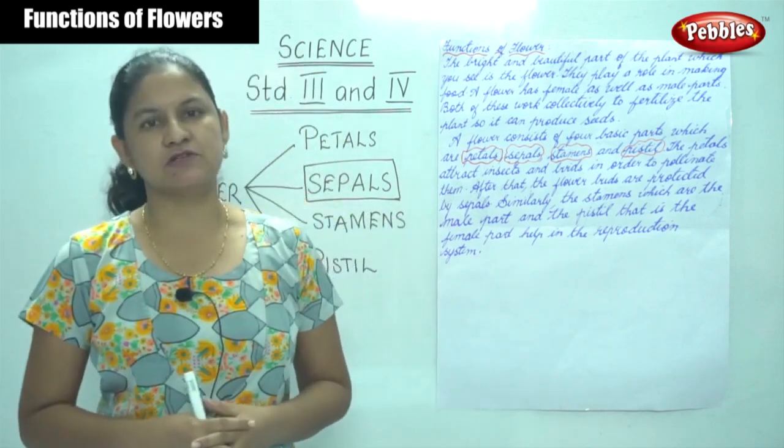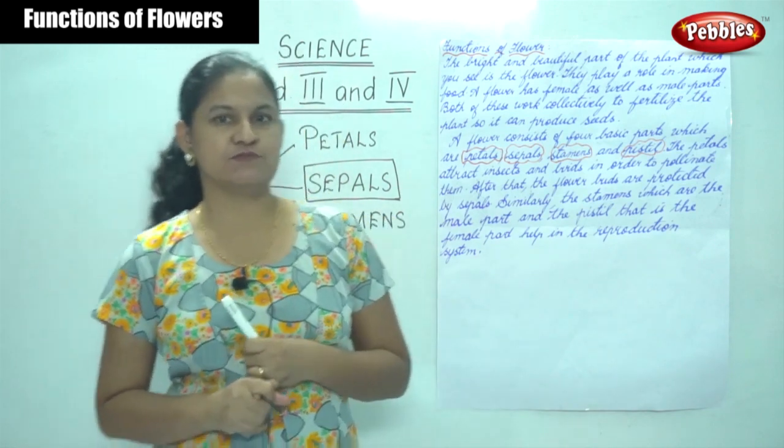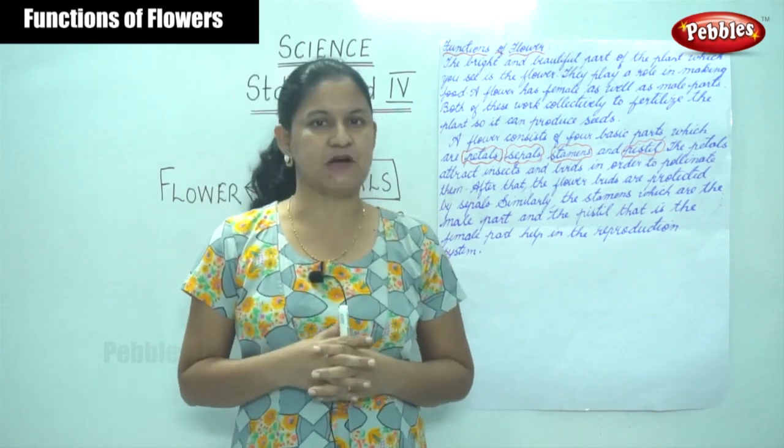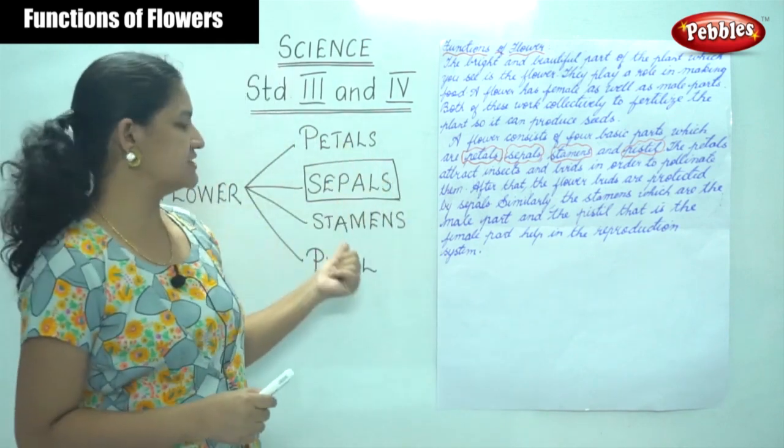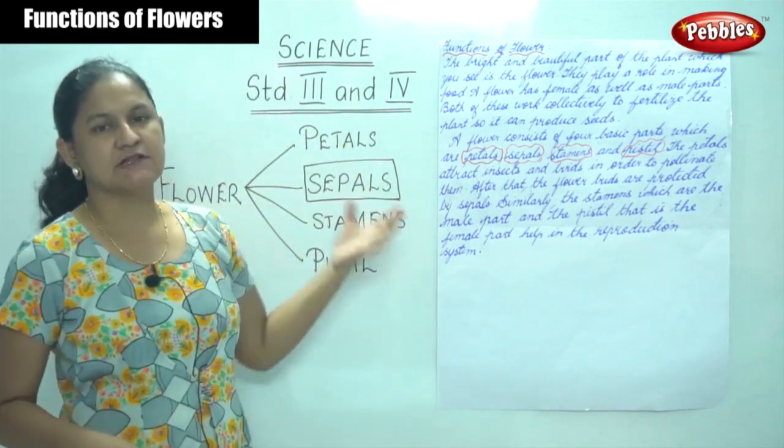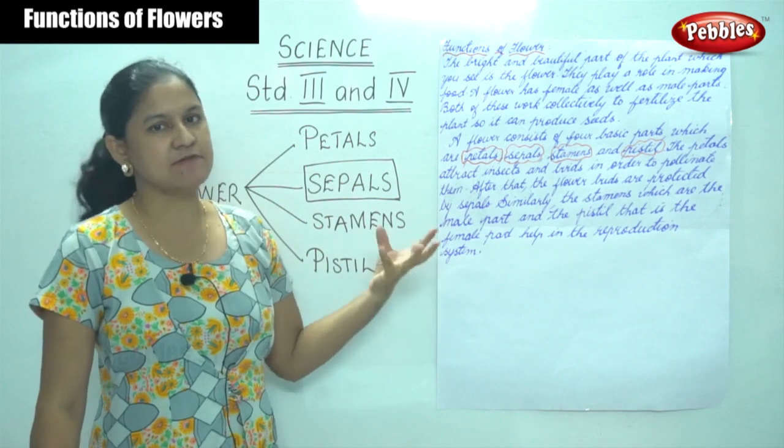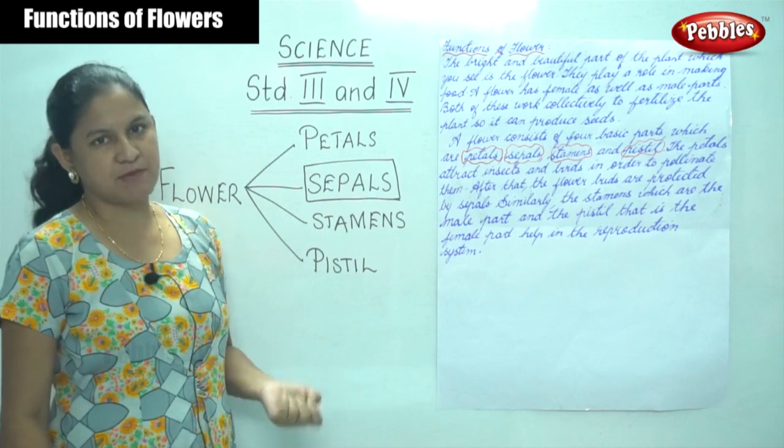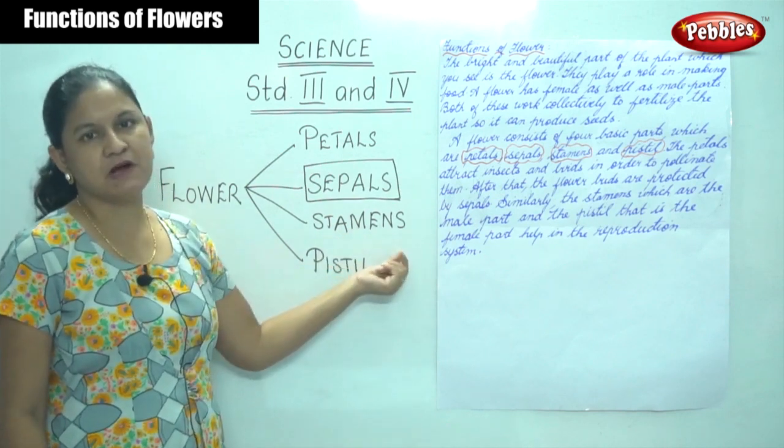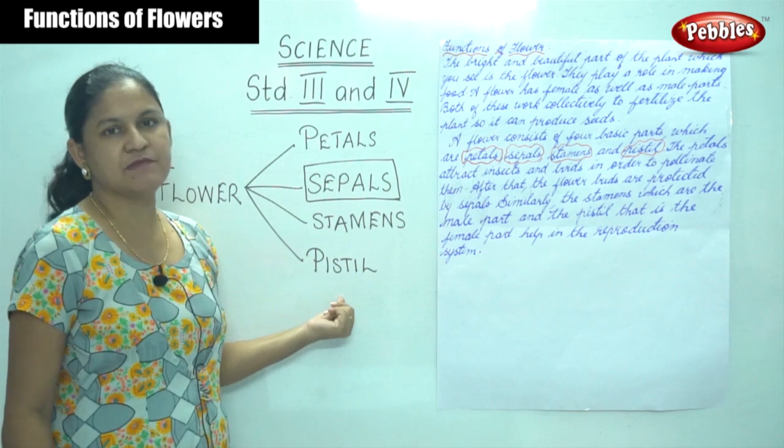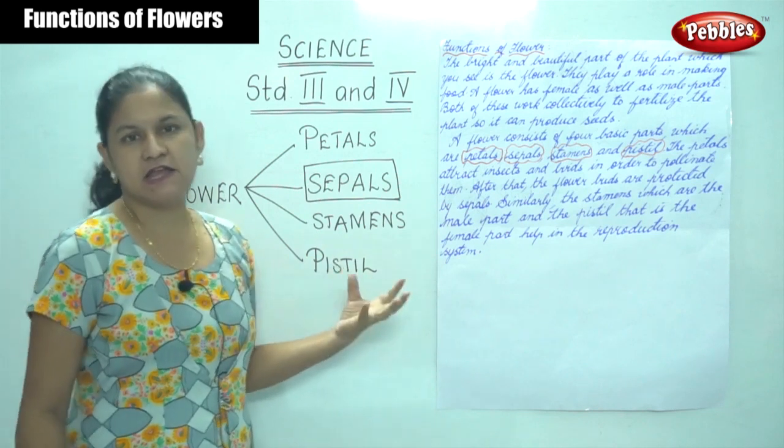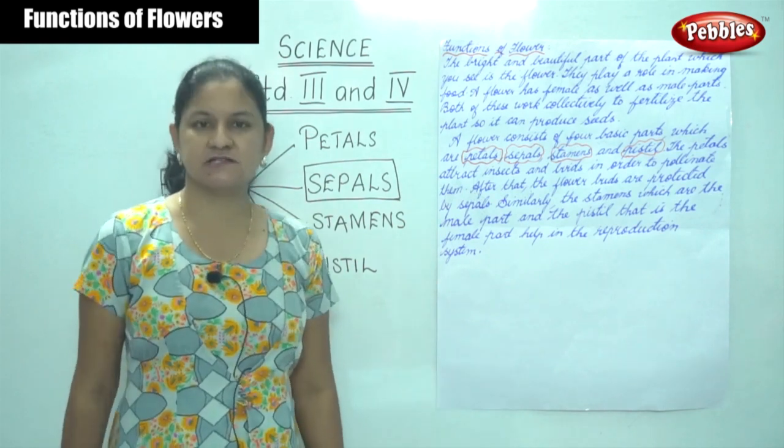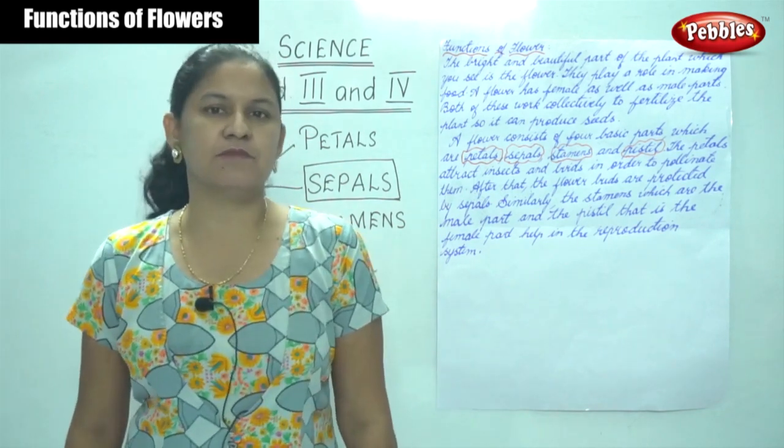So this is all about a flower. The flower is the most beautiful part of a plant and it has four basic parts: petals, sepals, stamens, and pistils. The petals attract insects and birds in order to pollinate them. The sepals protect the flower buds. The stamens are the male part and the pistil are the female parts of the flower, and they actively work together to help in the reproduction system.